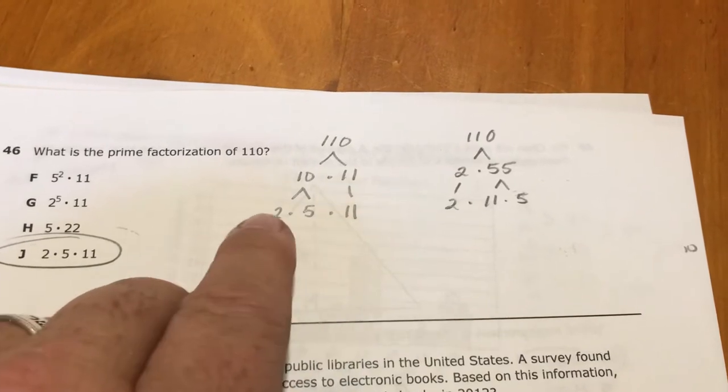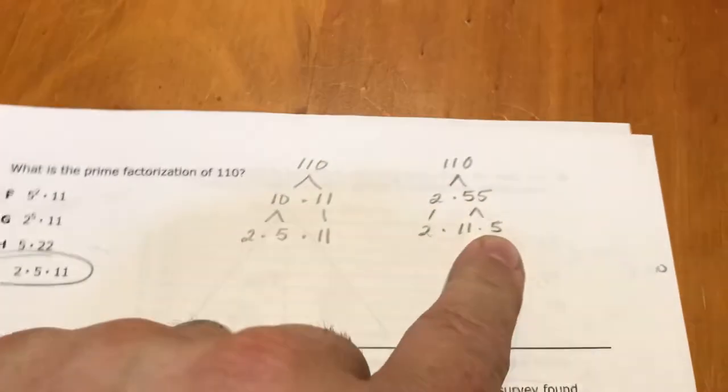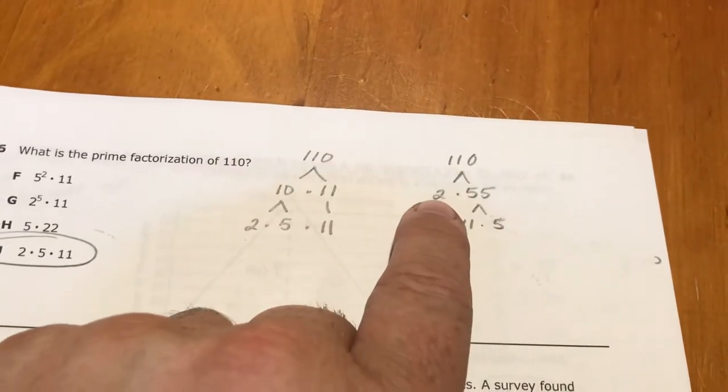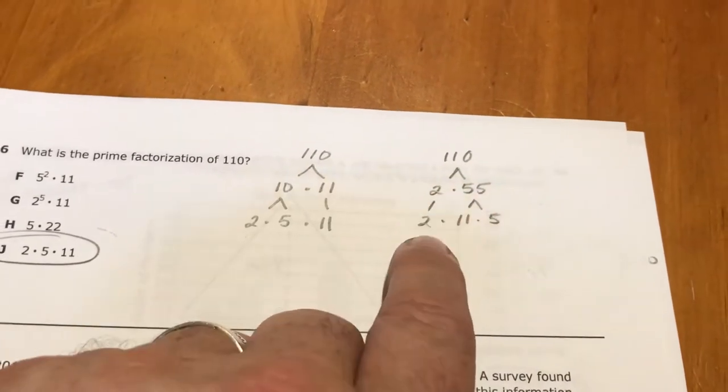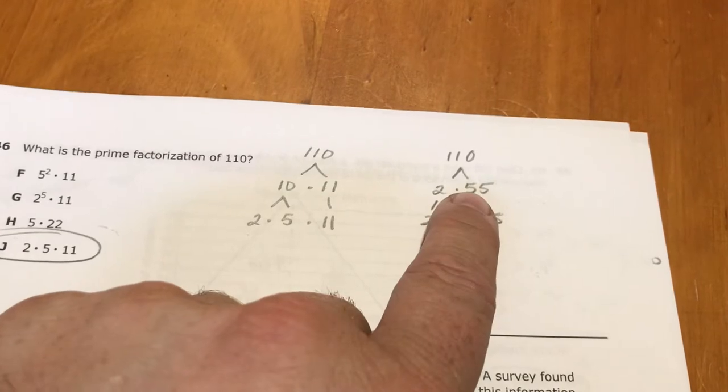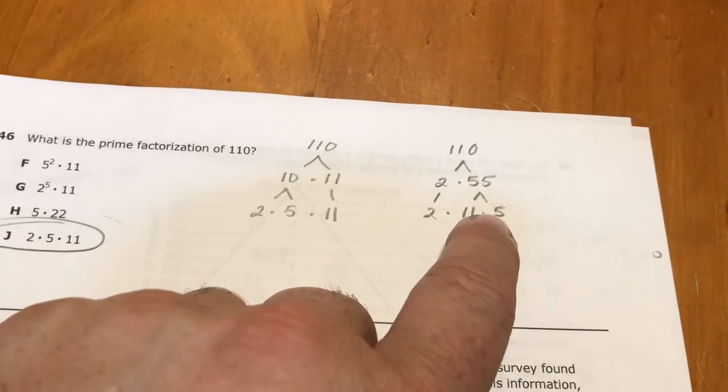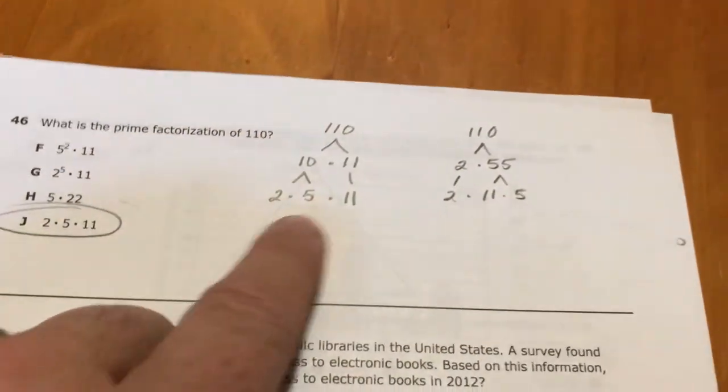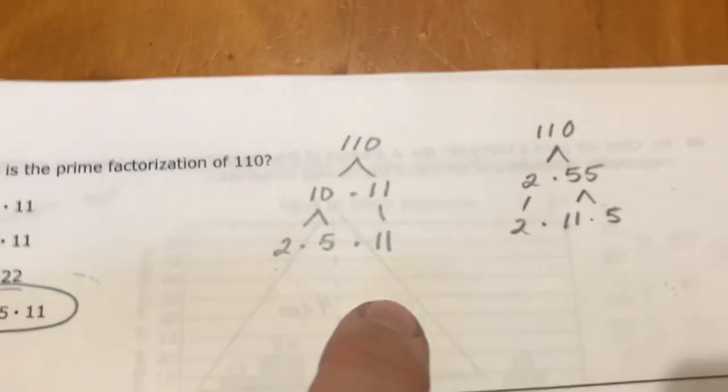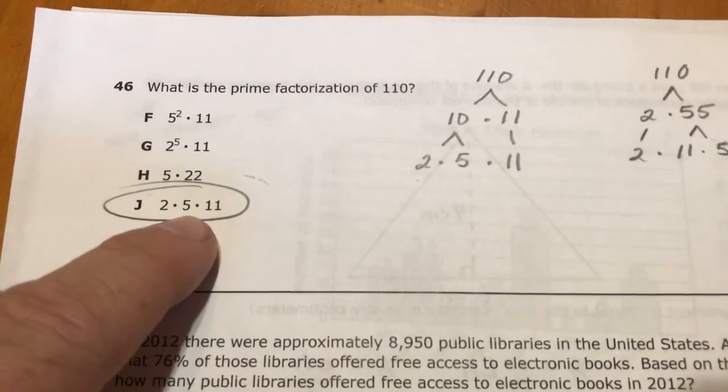110 can be made from 10 times 11. 10 comes from 2 times 5, and 11 you can't make that with anything except 11 and 1. So 2, 5, and 11. You could divide 110 by 2 because it's an even number, so 2 times 55. 2 is already a prime number and 55 can be made from 11 times 5. So once you have all prime numbers at the bottom of your factor tree, you're done. So you have a single 2, a single 5, and a single 11.